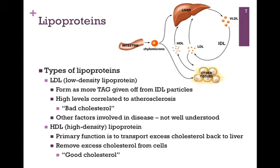High levels of LDL correlate to atherosclerosis, which we discussed in the previous lesson. This is why LDL is sometimes referred to as the so-called bad cholesterol — it's low-density, and you want low amounts because it correlates with this disease state. However, there are other factors involved in the disease that are not well understood, so although we know high levels of LDL correlate to vascular disease, we don't really understand why.